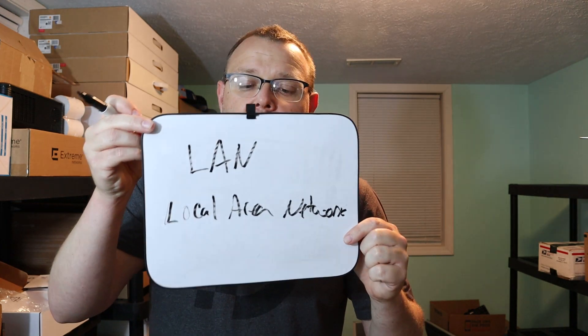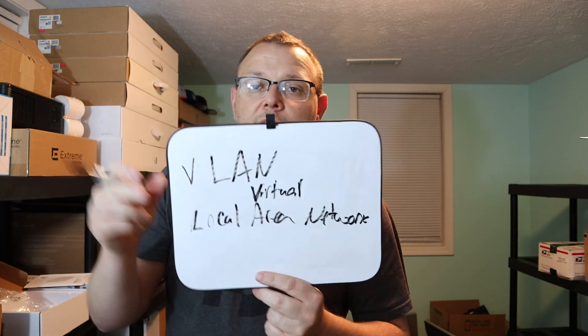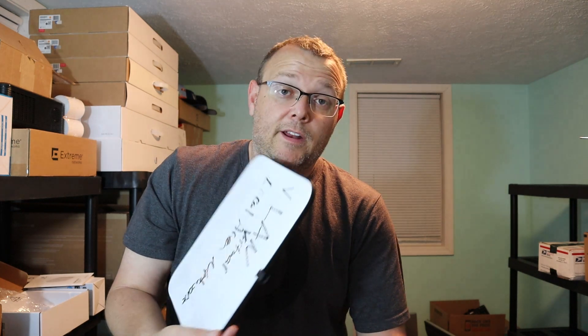So to really talk about what a VLAN is, first we're going to talk about a local area network, or a LAN. A local area network is a group of devices on a network that usually is in the same building or a very small geographic area. And within a LAN — and even on a WAN, but we are specifically talking about LANs — then you can have a VLAN.